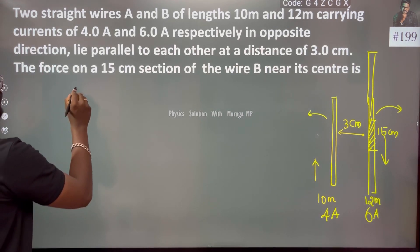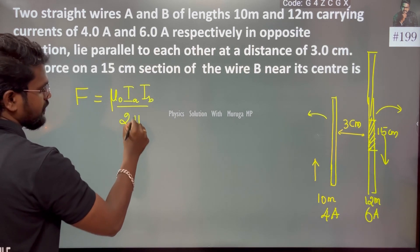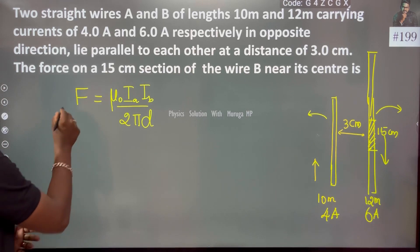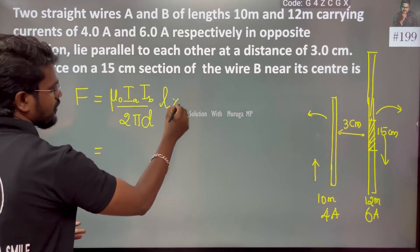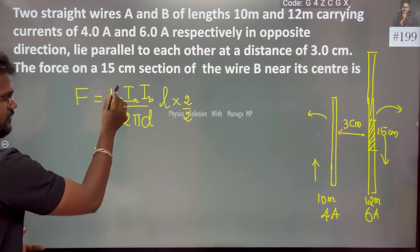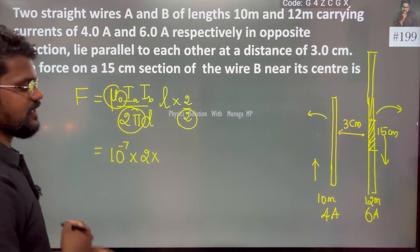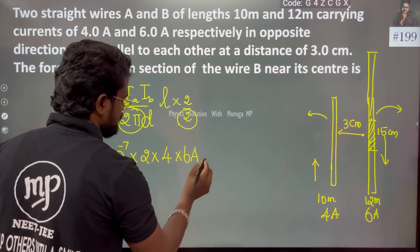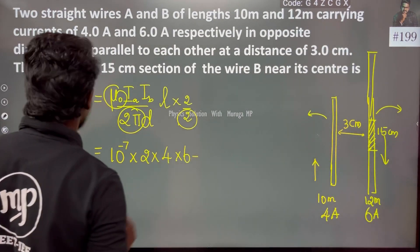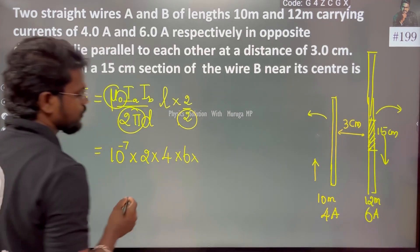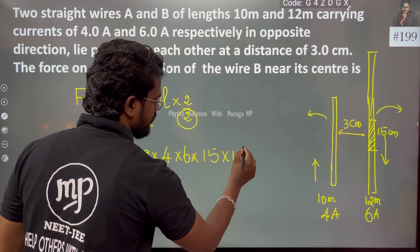The force on the wire is given by F = μ₀·Ia·Ib / (2πd). The force per unit length is F/L, so we multiply by length L. Using μ₀/4π = 10⁻⁷, the expression becomes: 10⁻⁷ × 2 × Ia × Ib / d × L. Here Ia = 4A, Ib = 6A, and the length is 15cm = 15 × 10⁻² m.